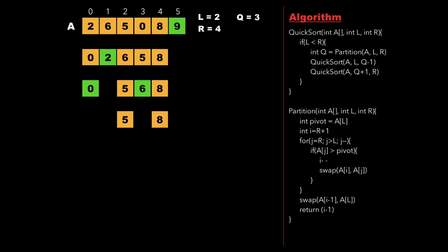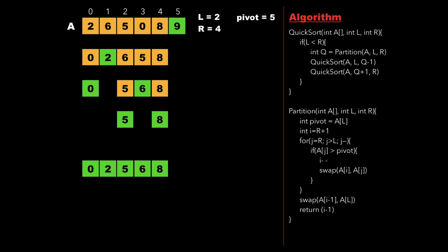Now let us consider the subarray 5, which is selected as the pivot. As we can see that 5 is at its correct location, so we move further and choose the next pivot as 8. Even 8 is at its correct location, therefore we finally get a sorted array as 0, 2, 5, 6, 8, 9.